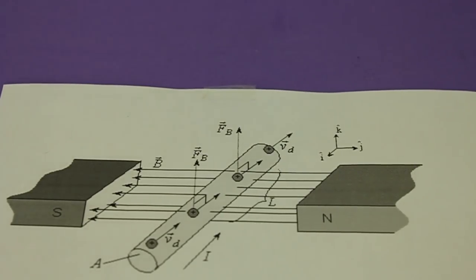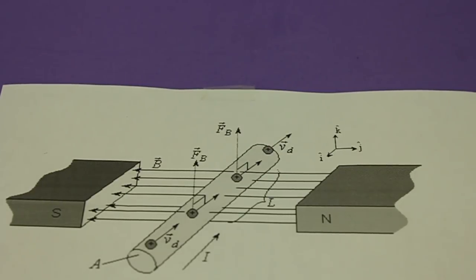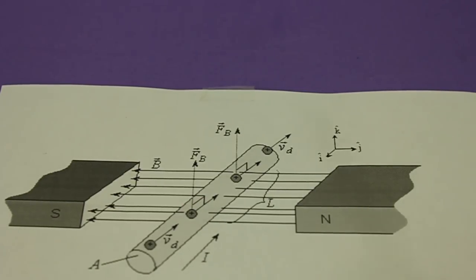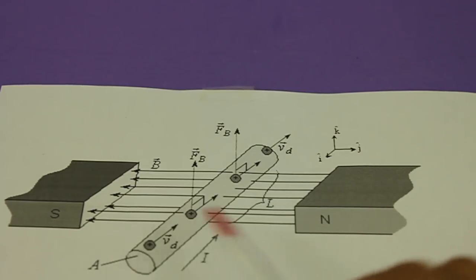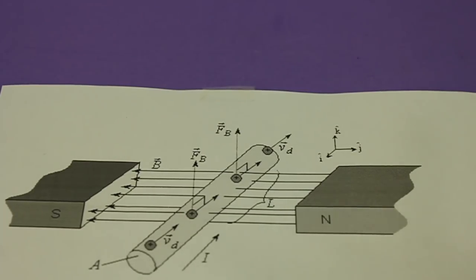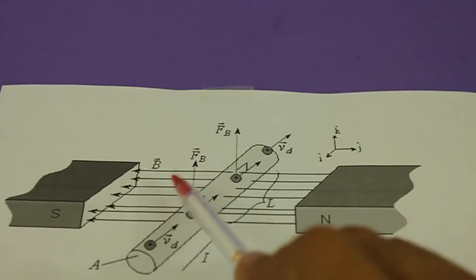The Lorentz force appears when we have a situation in which we have a magnetic field, in this case the field created by the magnets, and we have a conductor that carries an electric current. The interaction of the electric current with the magnetic field creates a force on the conductor, in this case the force points upwards.